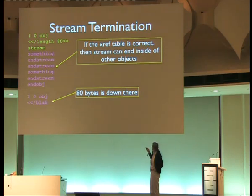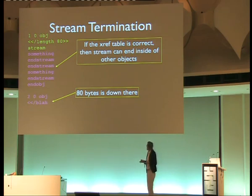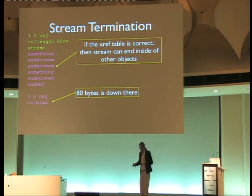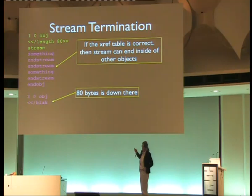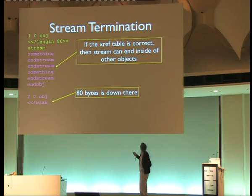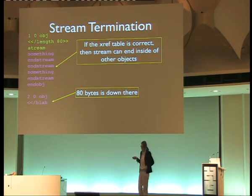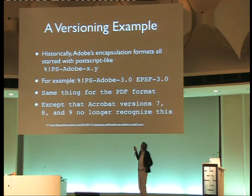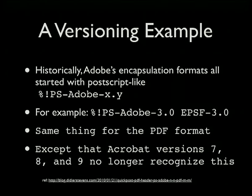If you set up the cross-reference table correctly so Acrobat can find objects normally, you can set the length to encompass all the rest of the file, and it will slurp the entire remaining raw data into the object. You can still use the objects inside it simultaneously. This morning I realized it's actually possible to write a PDF quine using this trick — I was working on it this morning but didn't have time to finish before the talk.